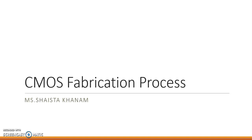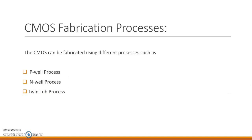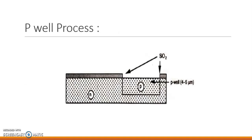So, that will reduce the area requirement. We will see there are different methods which can be used for CMOS fabrication: the P-well process, N-well process, and Twin-tub process. These are the processes which we are going to see, with the help of which the CMOS can be formed.